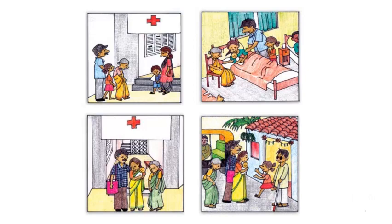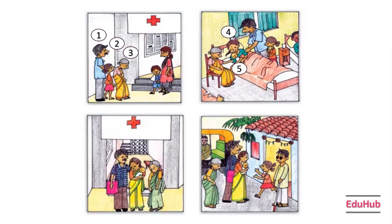We have seen some changes in Nimmi's family. There were four members before the arrival of the baby sister: father, Nimmi, grandmother, and mother. But now one more member has been added to the family — her baby sister. So in this way, Nimmi's family has changed with the arrival of a baby.